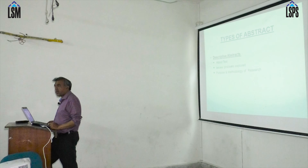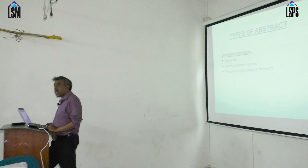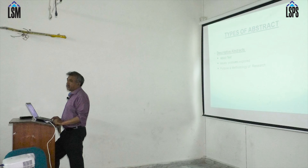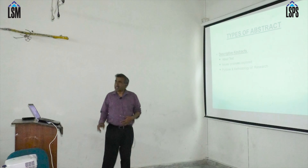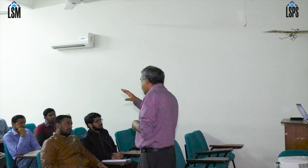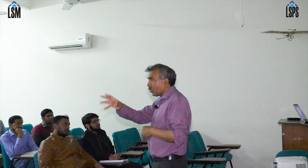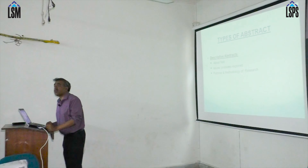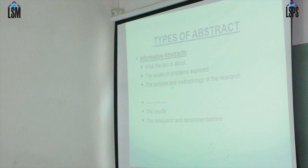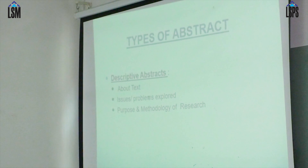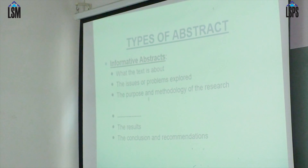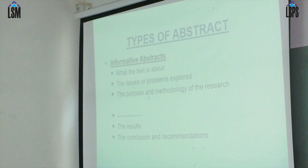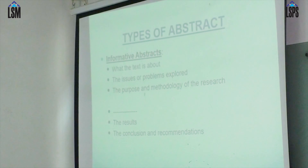About the text, the issue or problem explored — you tell your problem that we have explored, or the reasons we have explored. Purpose and methodology of research: we have done a lot of quantitative data analysis. This is the research methodology. This is the first descriptive abstract. In the informative abstract, there are other things: findings, conclusions, and results.